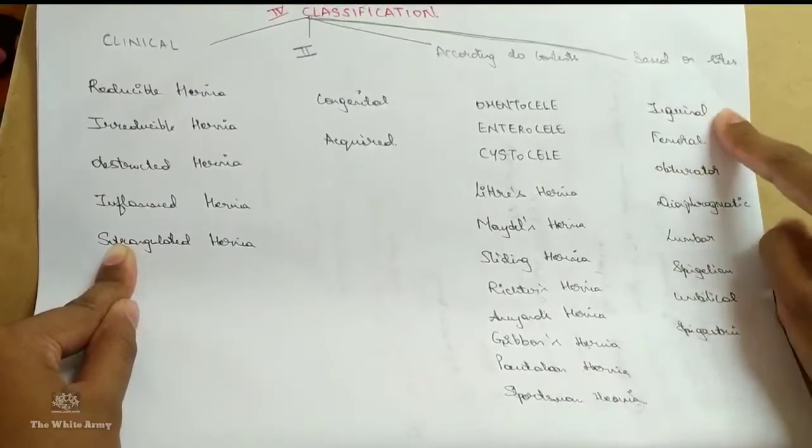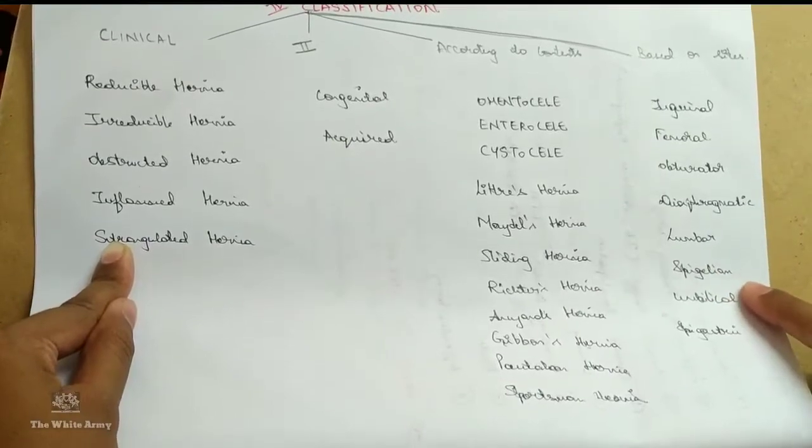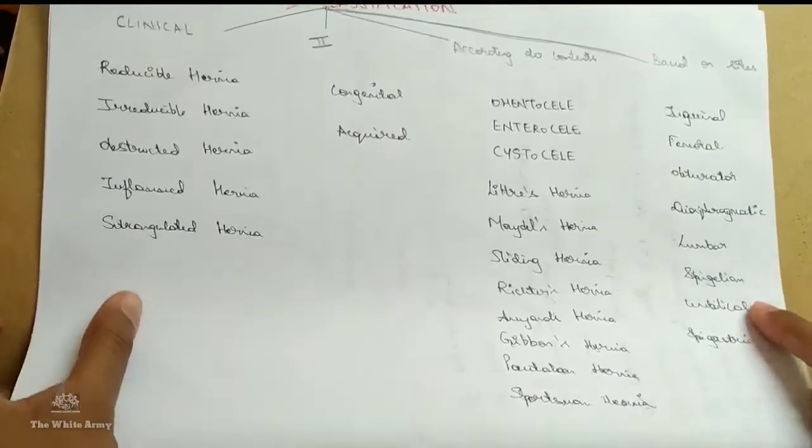Based on the sites, it's inguinal, femoral, obturator, diaphragmatic, lumbar, spigelian, umbilical, epigastric.